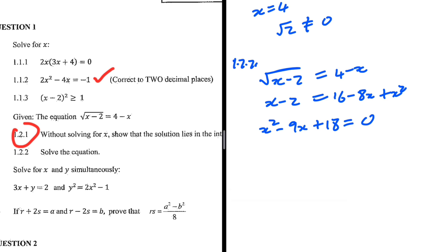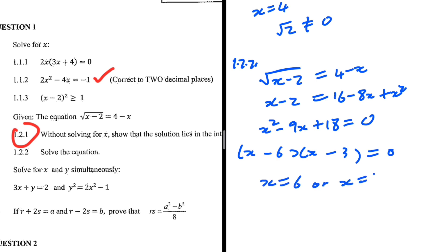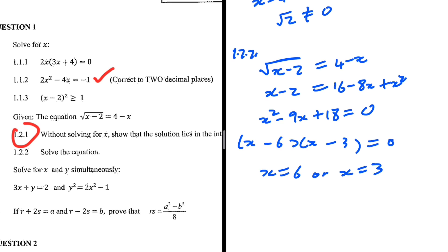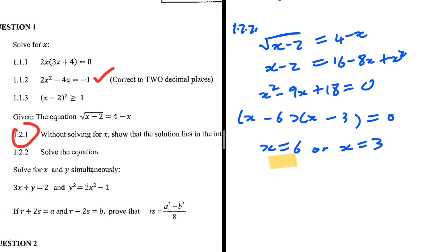We need to factorize x squared minus 9x plus 18 equals zero. Two factors of 18 that add to minus 9 are minus 6 and minus 3, so we get x minus 6 multiplied by x minus 3 equals zero. Therefore x equals 6 or x equals 3. We must check both. Substituting x equals 6: square root of 6 minus 2 is square root of 4, which is 2, but 4 minus 6 is minus 2. Two does not equal minus 2, so x equals 6 is not a valid solution.